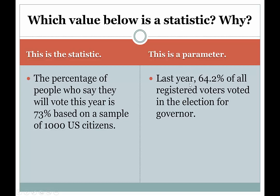In this case, the other value is a parameter because it says last year, 64.2% of all registered voters voted in the election for governor. They went and looked at the voting rolls and looked at how many people signed in saying they voted that day, then compared it to the list of all people eligible to vote and determined that 64.2% of all registered voters voted. The key word here is 'all' — they looked at the entire population. So that is a population parameter — the true proportion of people who voted last year, based on records for the entire eligible voting population.